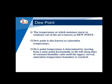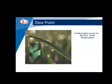First, we will go through dew point temperature. The temperature at which moisture starts to condense out of the air is known as the dew point temperature. For example, in the morning, dew is deposited on vehicle mirrors — that condensation occurs at the dew point temperature. Dew point is also known as saturation temperature. It is determined on a psychrometric chart by moving horizontally to the left from the state point along lines of constant humidity ratio until the saturation boundary is reached.